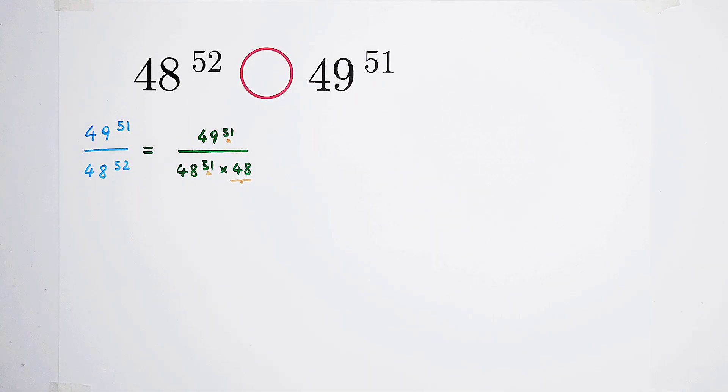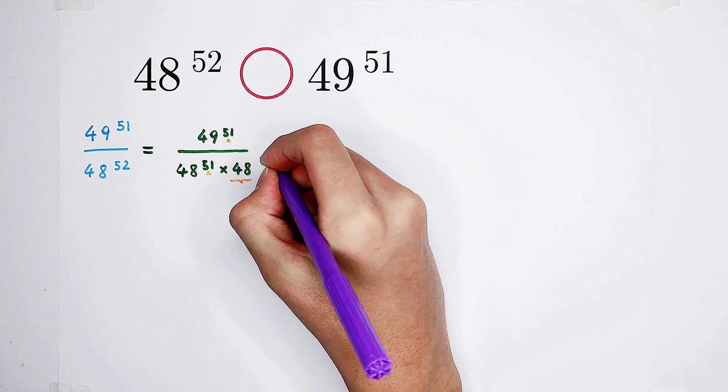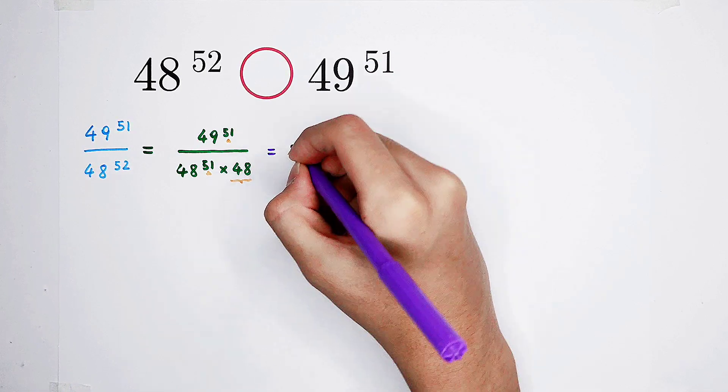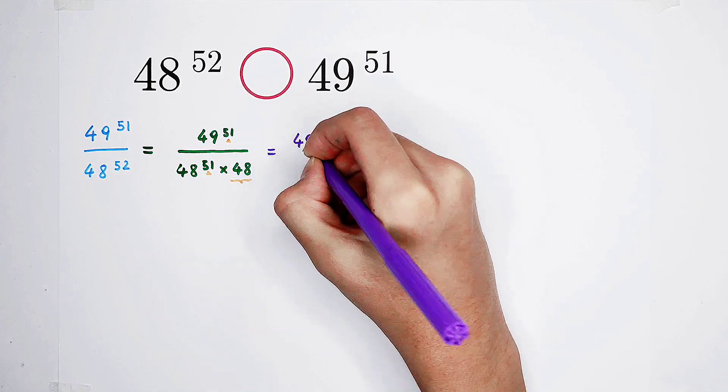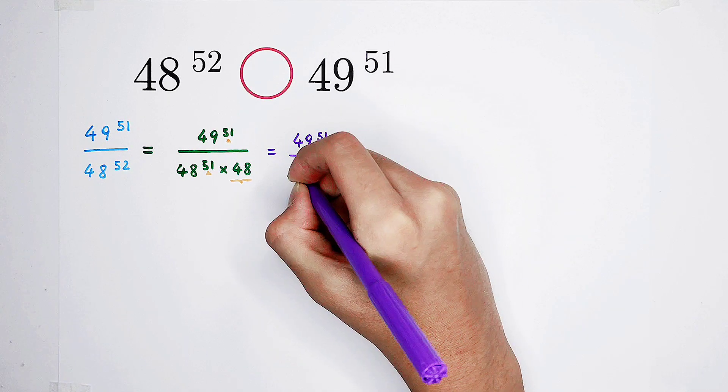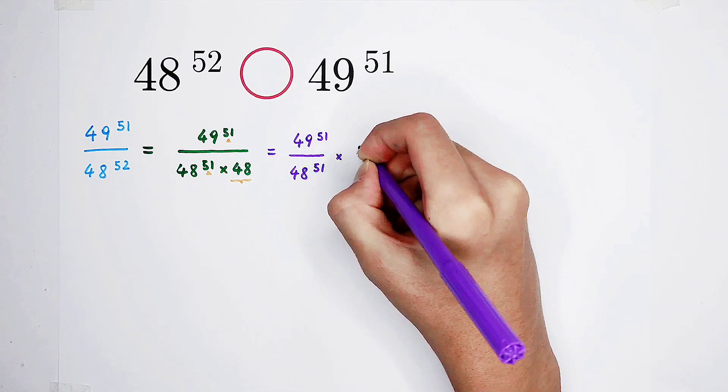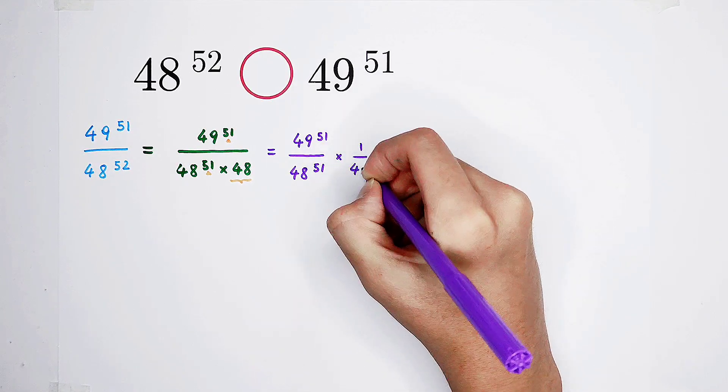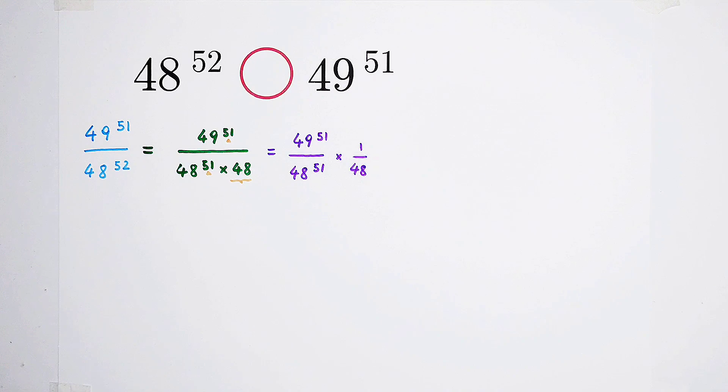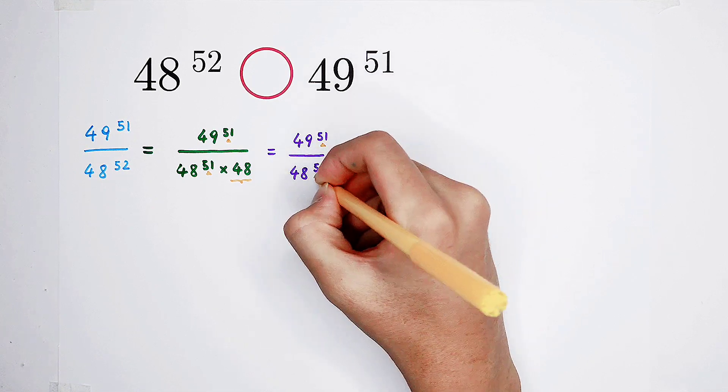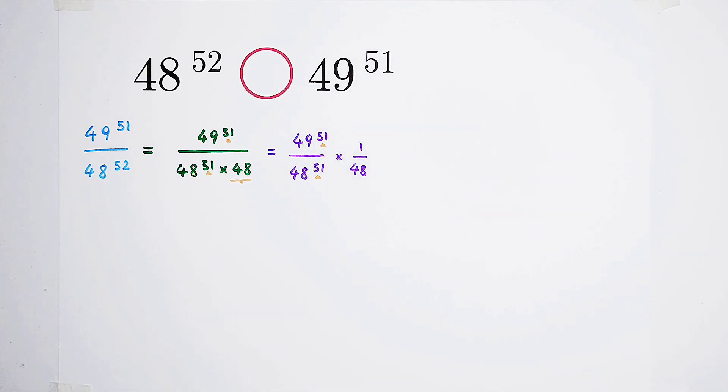We all hate it. So now, it should jump out. And then, it is 49 to the power of 51, over 48 to the power of 51, then times 1 over 48. Oh yeah, that's wonderful. So now we get same exponents on the numerator, and also on the denominator.